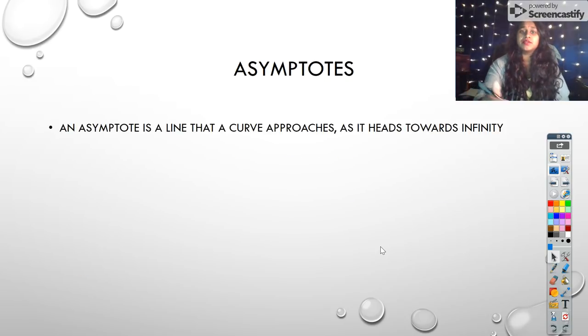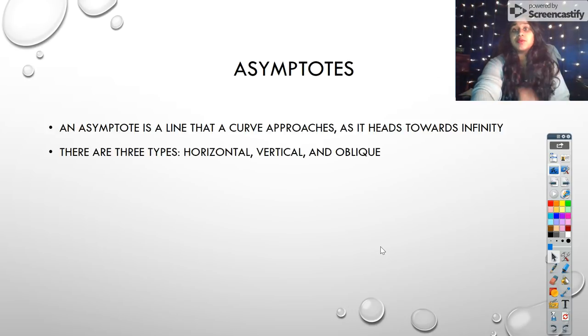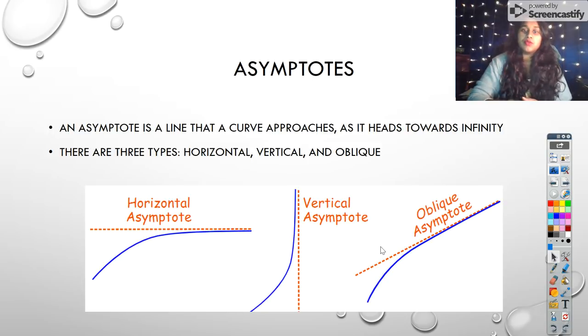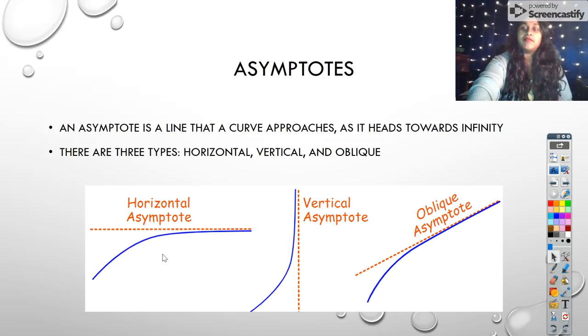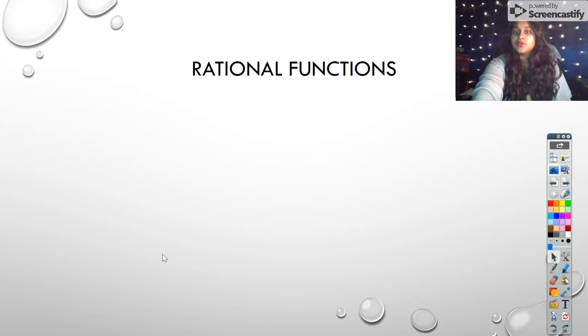The first thing we're going to talk about are asymptotes. Asymptotes are a line that a curve can approach, but it doesn't really cross it—every now and then it can, but the main thing is that it's going to head towards some sort of infinity. There are three types that we're going to talk about: horizontal, vertical, and oblique. Here's a visual representation of that. Our horizontal is literally that horizontal asymptote, and my graph can come up to it and approach it. My vertical, the same one. The new one that y'all might not have heard of until today is our oblique asymptote, which is our slanted, diagonal asymptote.